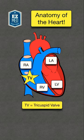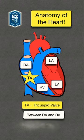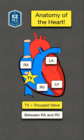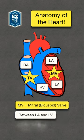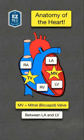First, we have the tricuspid valve, which is located between the right atrium and right ventricle. Next, we have the mitral valve, also known as the bicuspid valve, which is located between the left atrium and left ventricle.